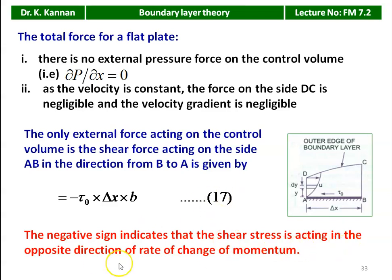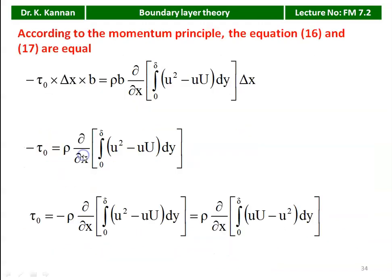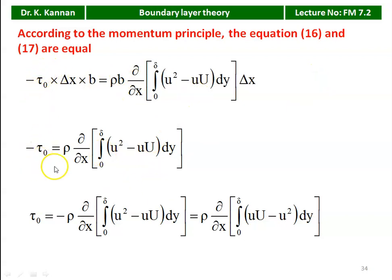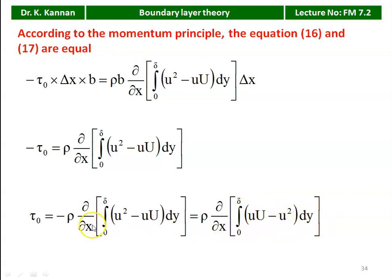Equating rate of change of momentum to the net force: −τ₀·δx·B = ρ·B·(∂/∂x)∫₀^δ (u² − u·U)·dy · δx. After cancelling δx and B, we get: −τ₀ = ρ·(∂/∂x)∫₀^δ (u² − u·U)·dy. Taking the negative sign to the other side: τ₀ = ρ·(∂/∂x)∫₀^δ (u·U − u²)·dy.